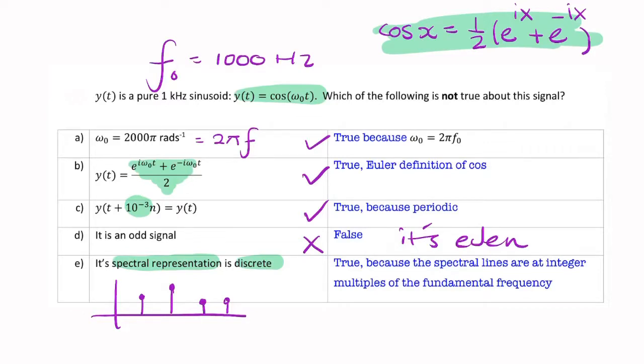What does the spectrum of a cosine look like? It just looks like that. So, you just have lots of zeros. All the components are zero, except that one component, because we only have that one component.